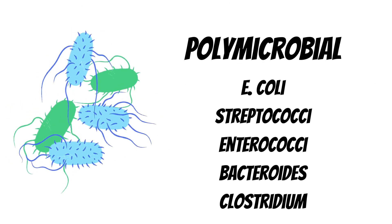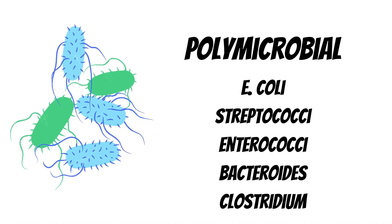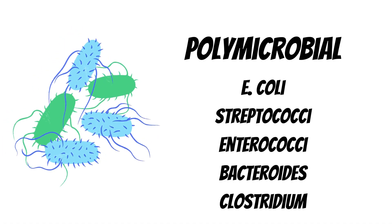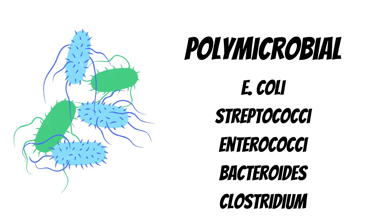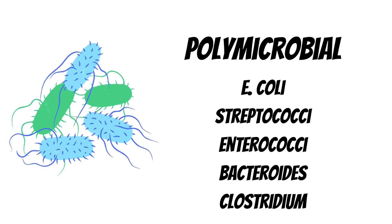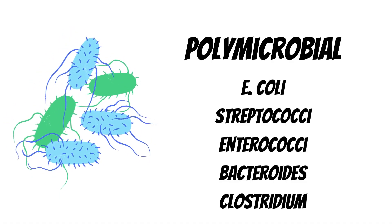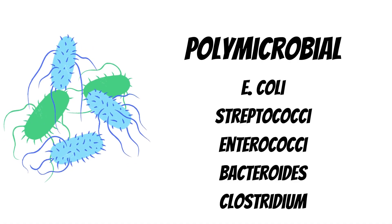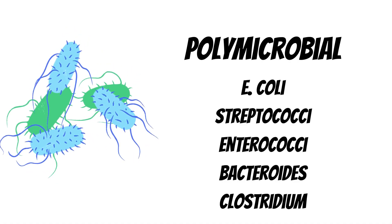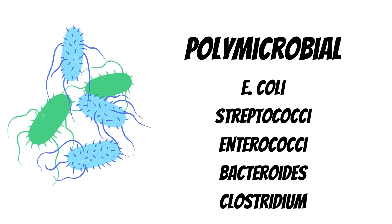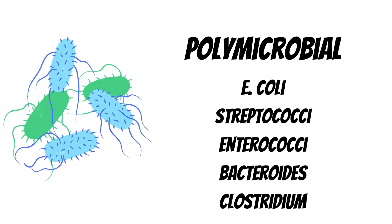Peritonitis is usually polymicrobial, as the bacterial flora of the intestine is a combination of multiple bacteria. The commonly found bacteria causing peritonitis are E. coli, streptococci, enterococci, bacteroids, and clostridium.